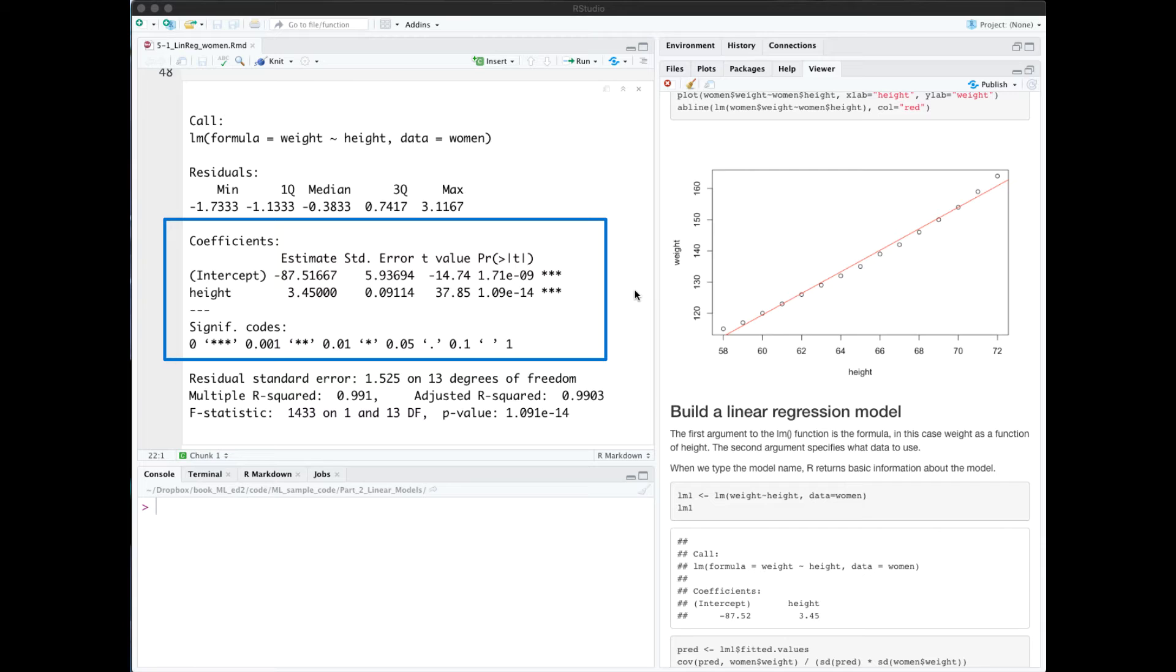The coefficients section gives us statistics on the coefficients and how well they fit the data. The last part of the summary gives statistics on the model overall and how well it fits the data.